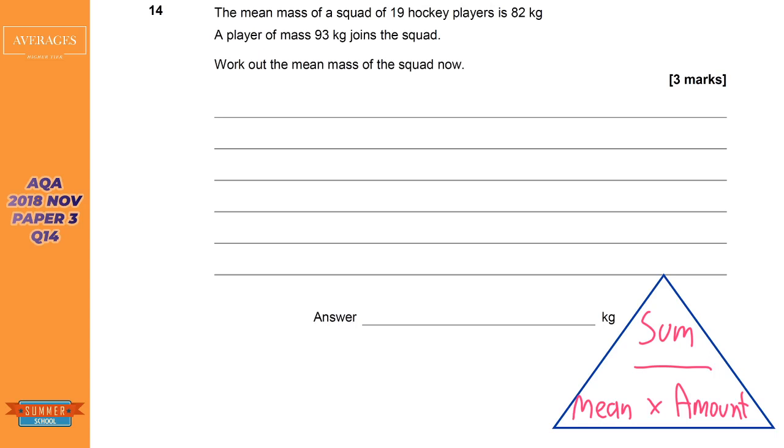The reason we bring this up is when you have a question like this and let's have a look at the question. It's given you the amount there and it's given you the mean but what it hasn't given you is what they add up to which you need to answer this question. So the first bit of this question is all about finding the sum. So the sum is going to be the amount which is this one times by the mean. So it's going to be 19 times 82.